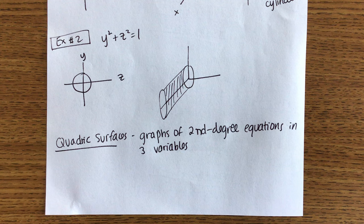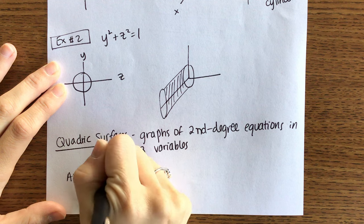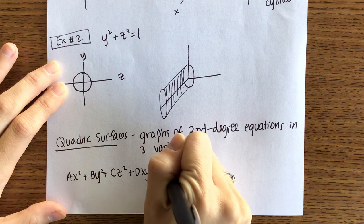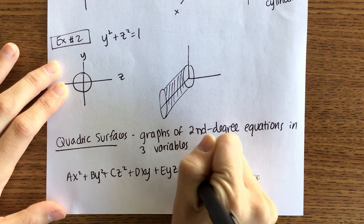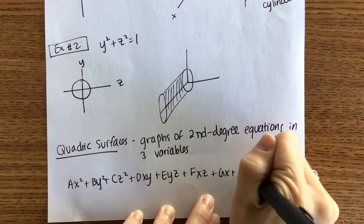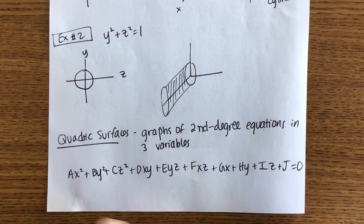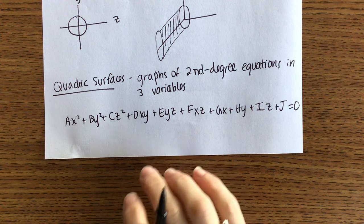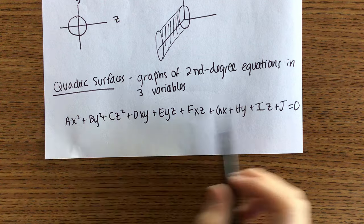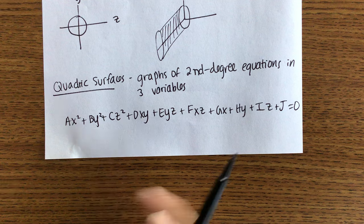Here is the most general equation: ax squared plus by squared plus cz squared plus dxy plus eyz plus fxz plus gx plus hy plus iz plus j equals zero. That's the most general equation. Now this is not helpful in any way, shape, or form. Don't worry about it — I'm not going to ask you to memorize this, and I'm not going to give you any equation that looks like that.